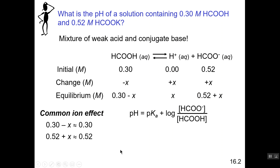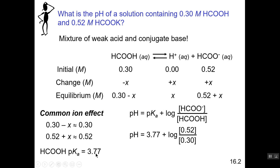The pKa value for formic acid can be found in tables — available in Canvas under files. Plugging the pKa and the concentrations of formate and formic acid into the Henderson-Hasselbalch equation gives a pH of 4.01. That's how this equation is used to calculate the pH of such a mixture.